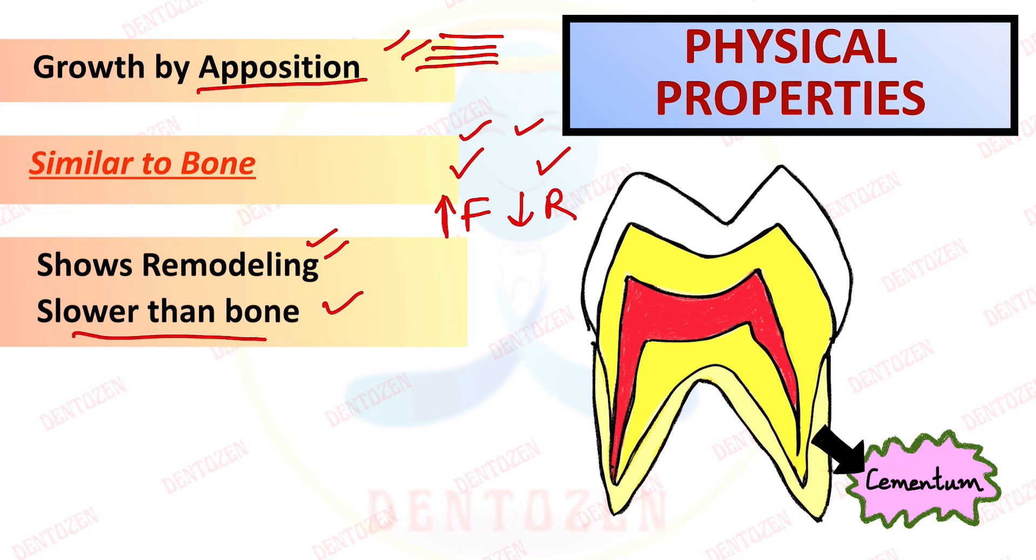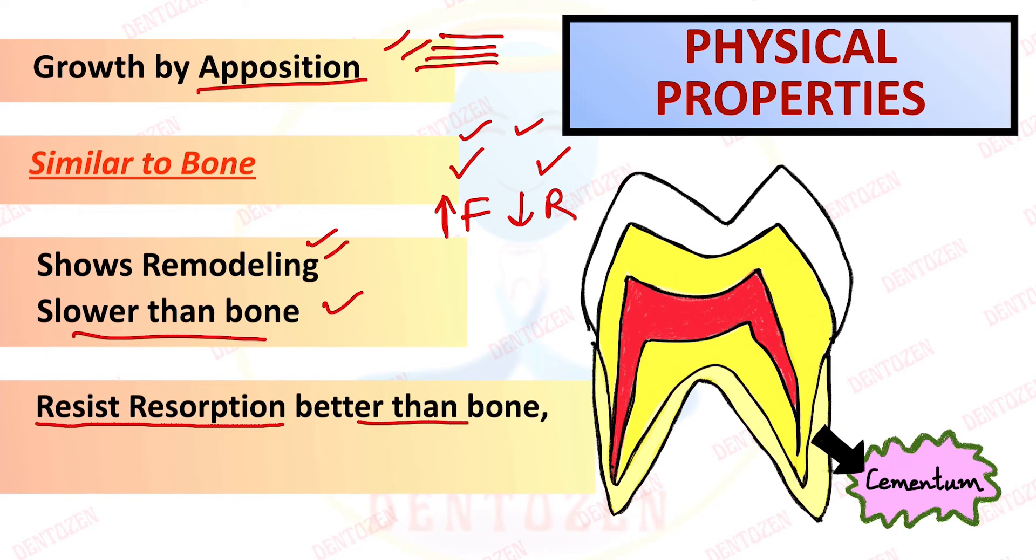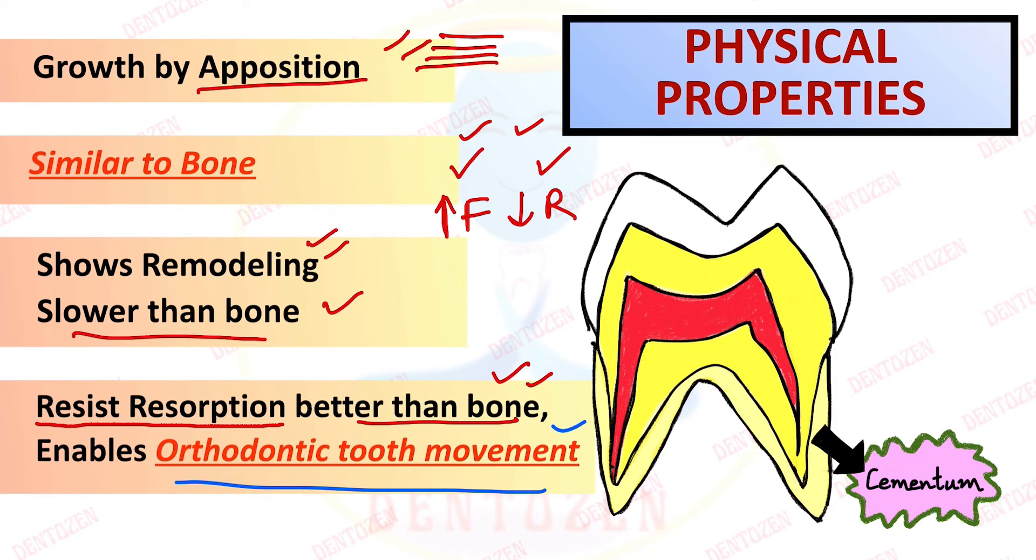But that rate is slower than bone. Bone is fast, cementum resorbs slowly. So because of this property, that is it can resist resorption better than bone, it permits, it enables the orthodontic tooth movement. How? When we apply orthodontic forces to move the tooth, under these forces the cementum will not resorb easily. This is not the way to take the tooth. And it will then permit the movement of the tooth. Thus the teeth will move and that is how it permits the tooth movement.